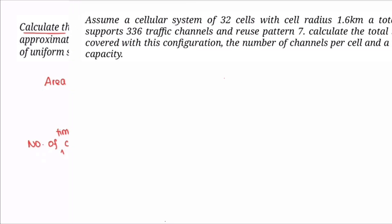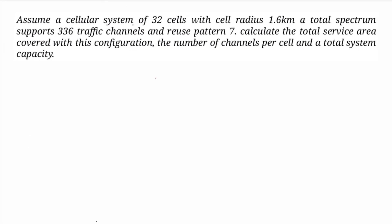Next, let us solve the second sum. In this cellular system there are 32 cells, cell radius 1.6 km, total 336 channels in use, frequency reuse pattern of 7, and cluster size 4.